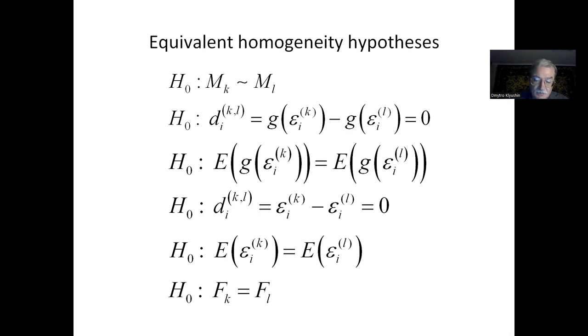However, the hypothesis that accuracy measures obey the same distribution is more general. Thus, to test homogeneity, it is necessary to test the null hypothesis not only in the particular case when mathematical expectations are equal, but in the general case when the distribution functions are equal.